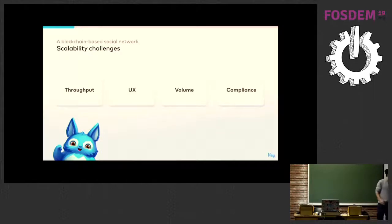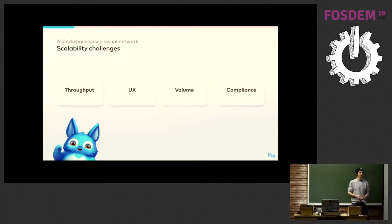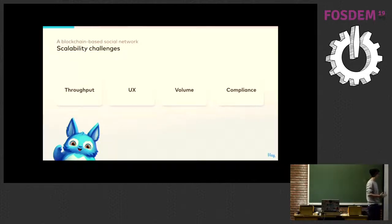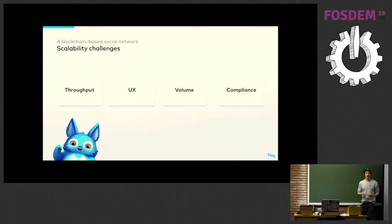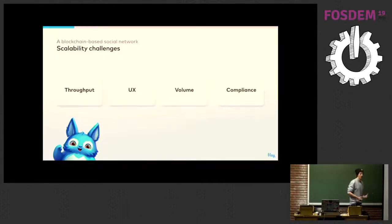Then there's user experience. If you want to build a social network, it's not a one-player game. You need thousands of users to make this a meaningful experience. But to get mass adoption, you need good UX. And UX is always clashing with security, and blockchain is very secure. So how do you make sure you have UX that is friendly enough that many people come and join your network? And then what about volume? If we start storing all the content of posts, we're going to hit very high storage costs.